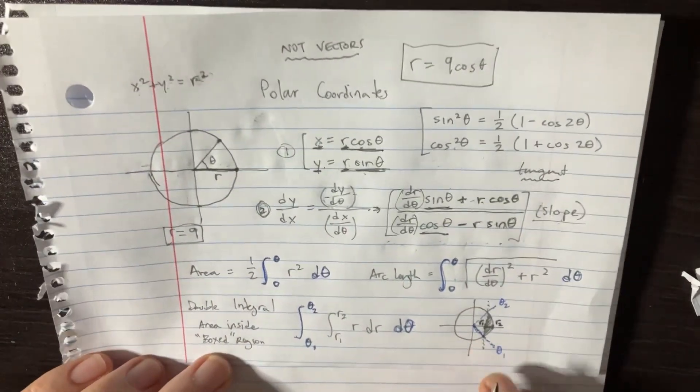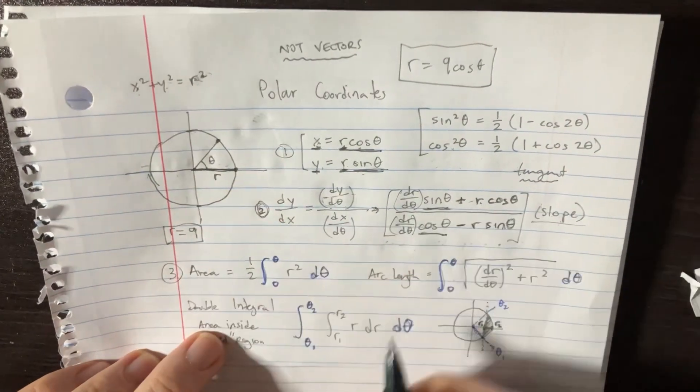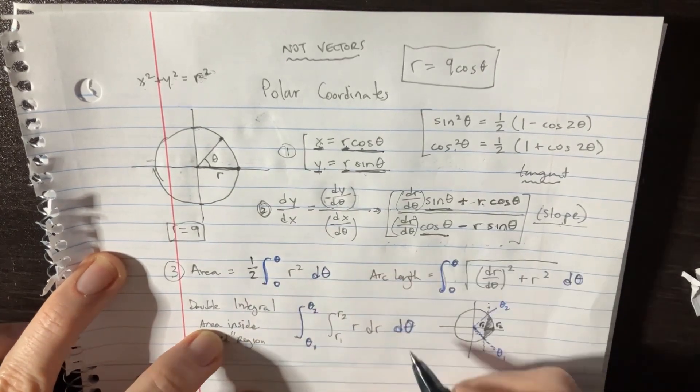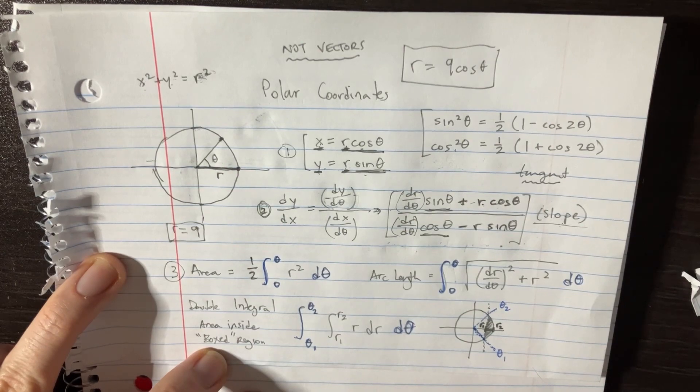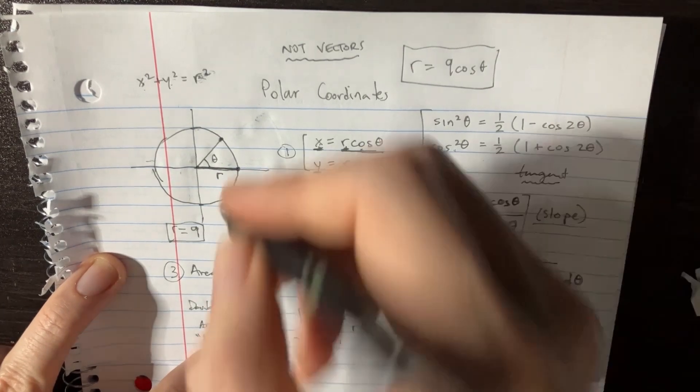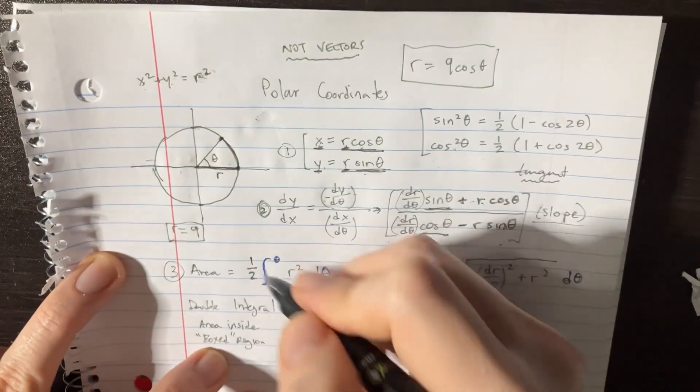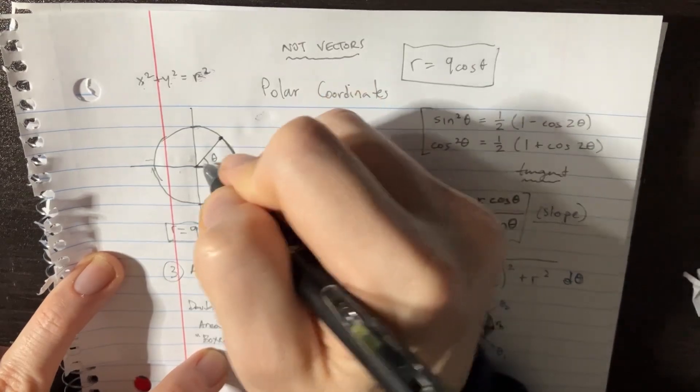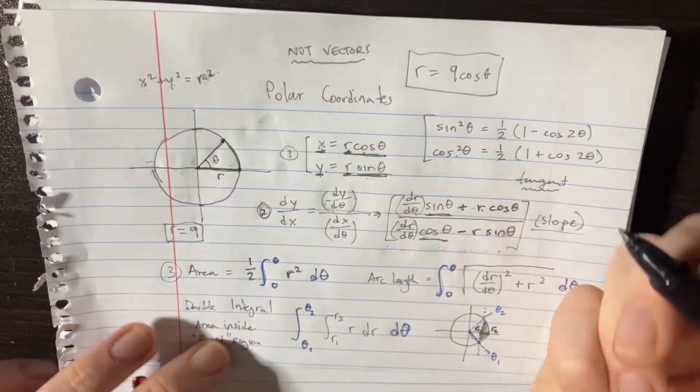We only really need to think about like two or three more things. Next we just need to know how to find the area. The area is just going to be this equation right here. It's almost as if it was the equation of like a triangle or something, but basically you're gonna have one half r squared and then it's just d theta.